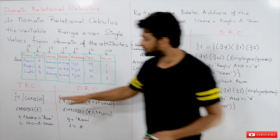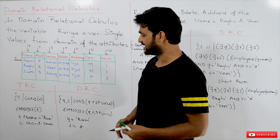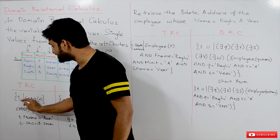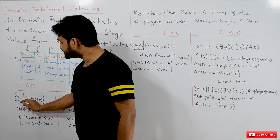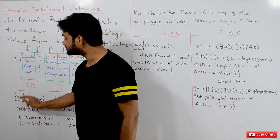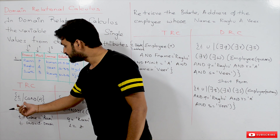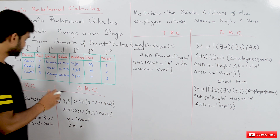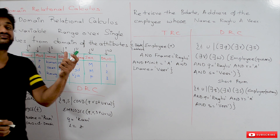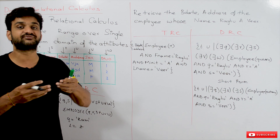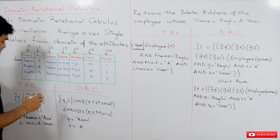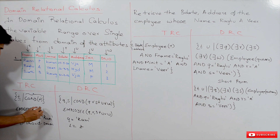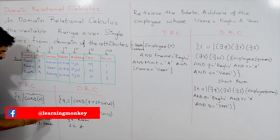Let's look at the differentiation between tuple relational calculus and domain relational calculus. In the tuple relational calculus expression, t is a variable, and for each tuple in the relation we apply conditions. We call those conditions the formula. The formula has atoms — there are different ways in which the formula can be represented, all of which were clearly discussed in our tuple relational calculus videos.